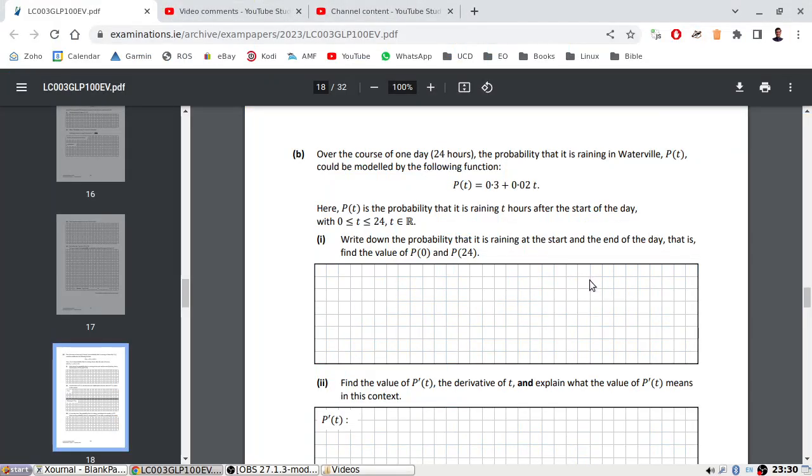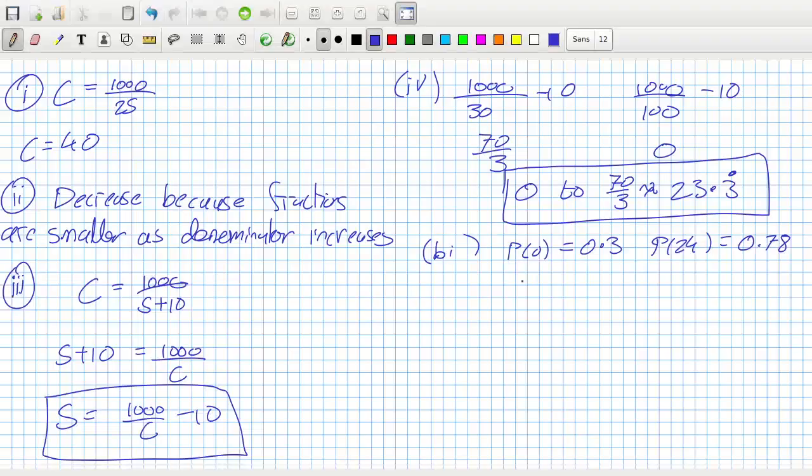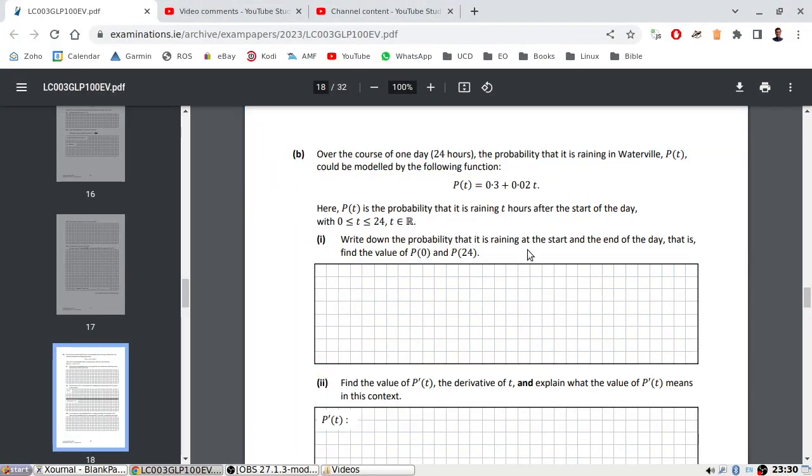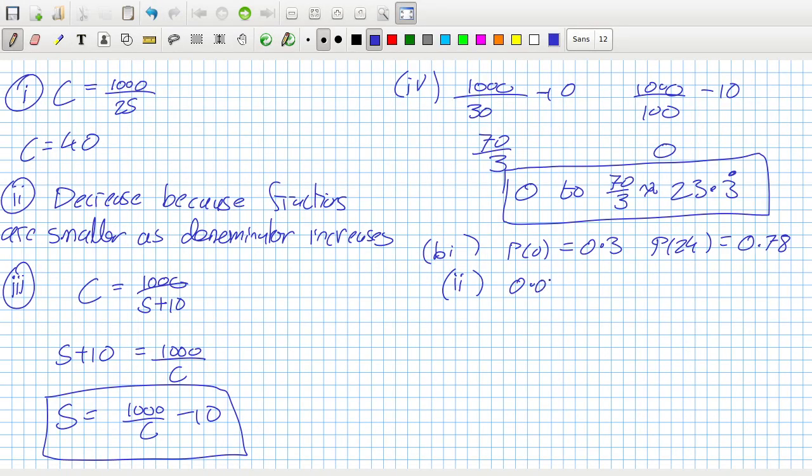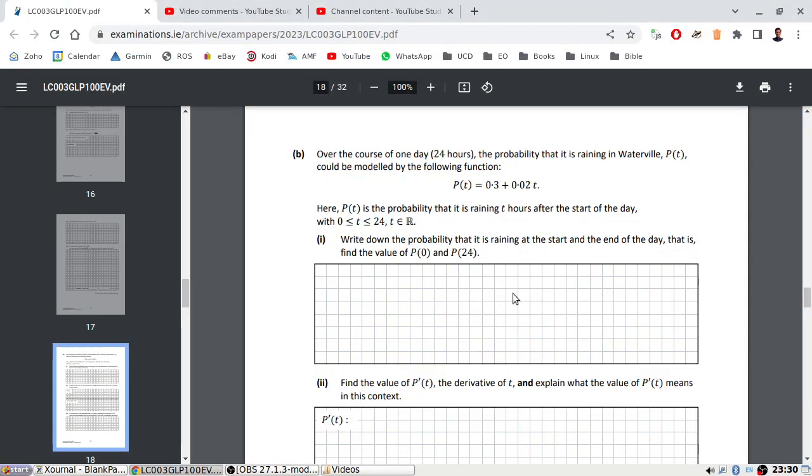Find the value of P derivative and explain what the value means. That's a very bad question. The derivative will be 0.02, and the explanation is it's the rate of increase in probability per hour throughout the day. That's a really terrible question.